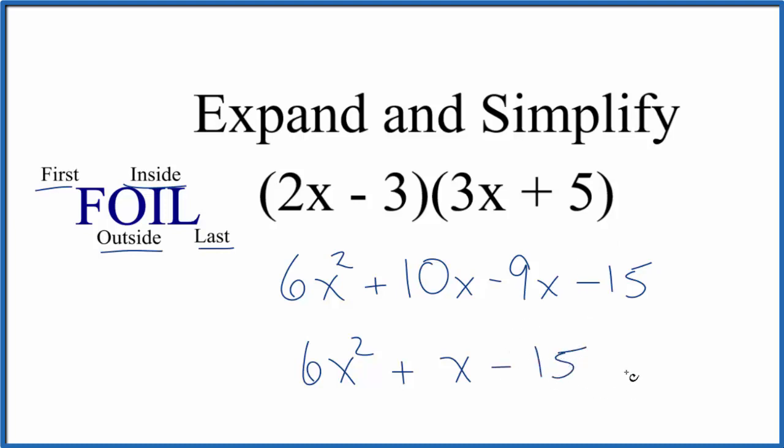So, this is now expanded and simplified. If you've factored this, it's basically just doing the reverse. If we factor it, we're going to get the same thing up here. These are the same equivalent expressions, just written differently. It's Dr. B, expanding and simplifying 2x minus 3 times 3x plus 5. Thanks for watching.